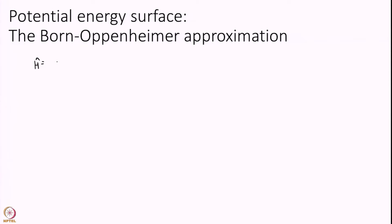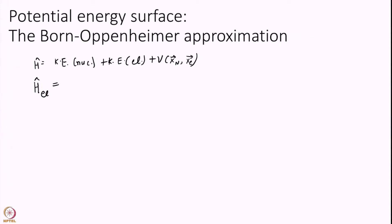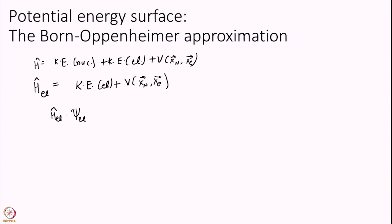I have written this Hamiltonian as KE of nucleus plus KE of electrons plus potential energy. To make progress, we define another Hamiltonian - the electronic Hamiltonian - as just the kinetic energy of electrons plus the full potential, without the kinetic energy of nucleus. I am going to solve for just this electronic Hamiltonian's eigenfunctions and eigenvalues.